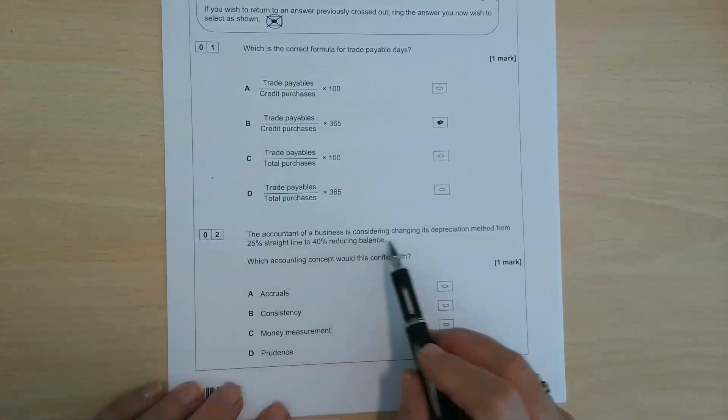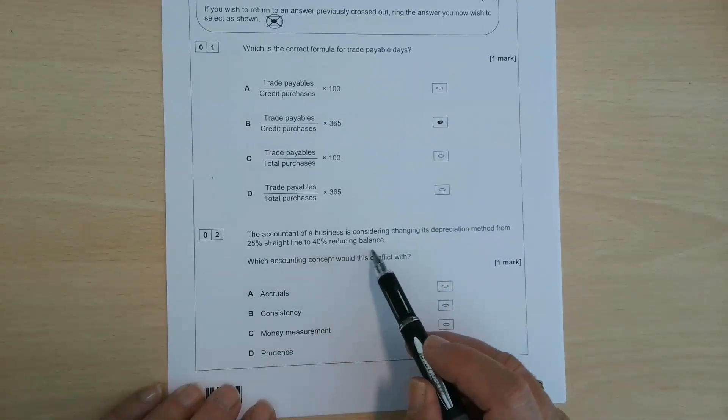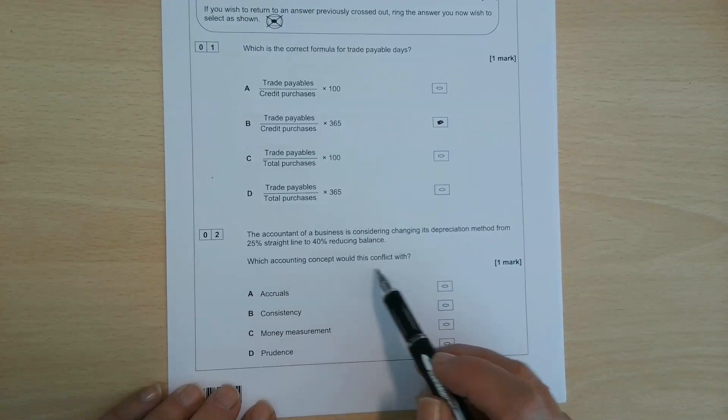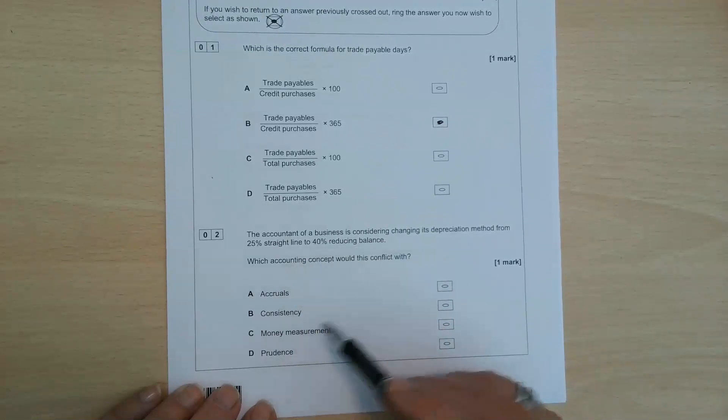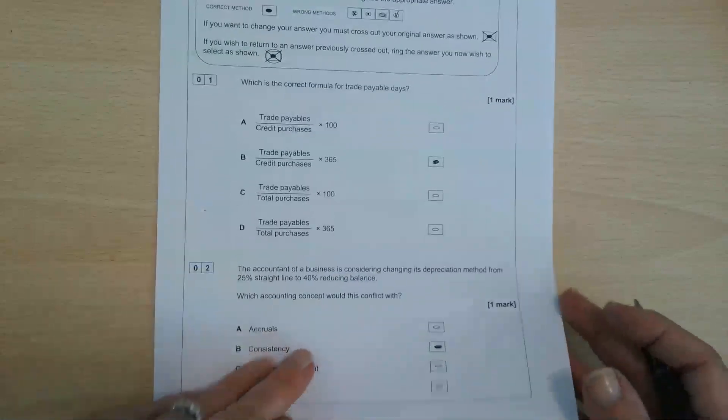The accountant of a business is considering changing its depreciation method from 25% straight line to 40% reducing balance. Which accounting concept would this conflict with? Well, if we're changing the method, it's going to have to be consistency. It can't possibly be anything else.